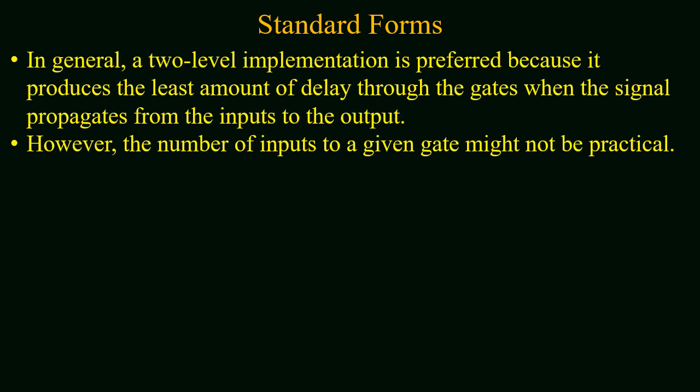In general, two-level implementation is preferred because it produces the least amount of delay through the gates when the signal propagates from input to output. However, the number of inputs to the given gate might not be practical.